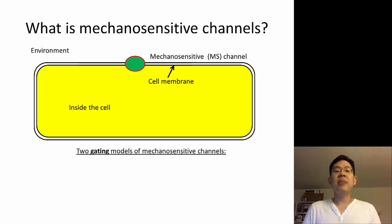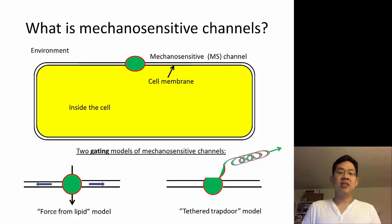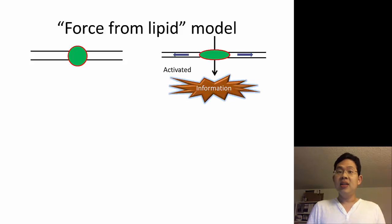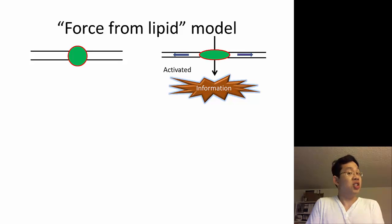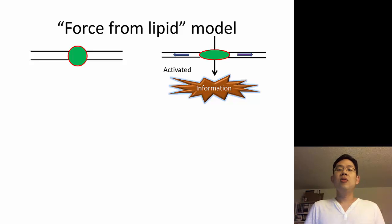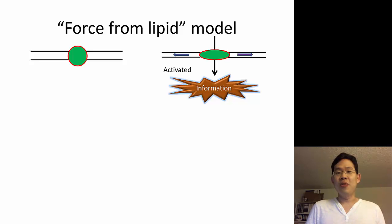Currently, there are two models to describe how a mechanosensitive channel opens. One is called the force from lipid model, and the other is called the tethered trapdoor model. We'll talk briefly about the distinction between the two. In the force from lipid model, as the name implies, the force coming from the cell membrane itself is sufficient to change the conformation or shape of the mechanosensitive channel in such a way that allows it to create a pathway for information to flow through. The cell membrane is primarily made up of lipids, hence the name force from lipid. One class of mechanosensitive channel that follows this model is the bacterial mechanosensitive channel, which is the first mechanosensitive channel that has been described.